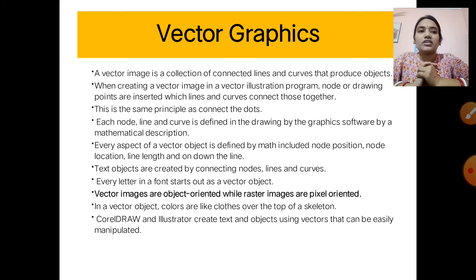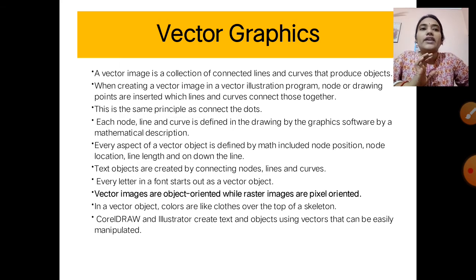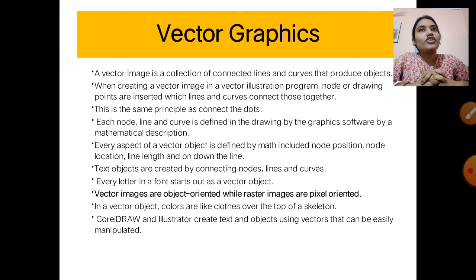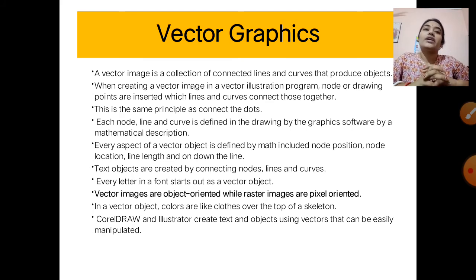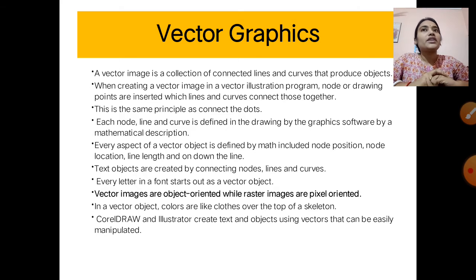Now let's discuss vector graphics. A vector image is a collection of connected lines and curves that produce objects. Raster images are a collection of dots, but vector images are a collection of connected lines and curves. When creating a vector image in a vector illustration program, nodes or drawing points are inserted, and lines and curves connect those together.